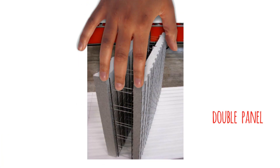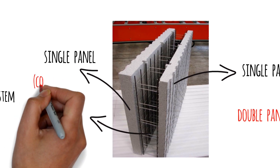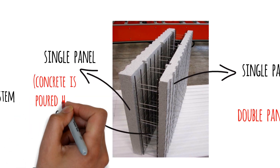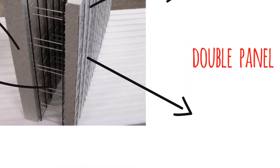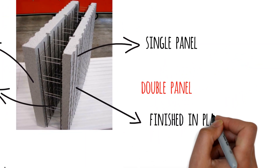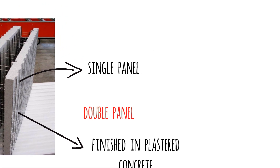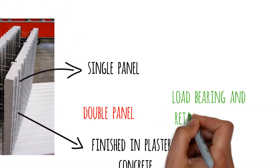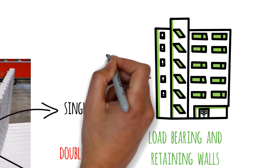The second type of panel is the double panel. It consists of two single panels joined together with a cavity in the middle. This cavity is poured with concrete on site, and this is what gives the double panel its strength. The external faces are finished in plaster. They are mostly used for load-bearing and retaining walls, and double panels can do up to 20 stories in height.